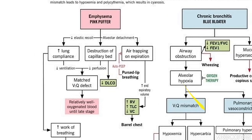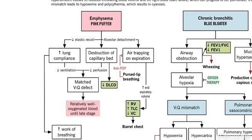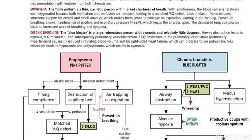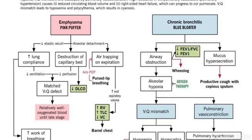In emphysema, patients are called pink puffers. They are thin with severe cachexia and severe muscle wasting because they cannot expire normally and must perform active expiration. The pathogenesis of emphysema decreases the elastic recoil of the lungs and causes alveolar detachment. As elastic recoil decreases, lung compliance increases, disturbing ventilation.